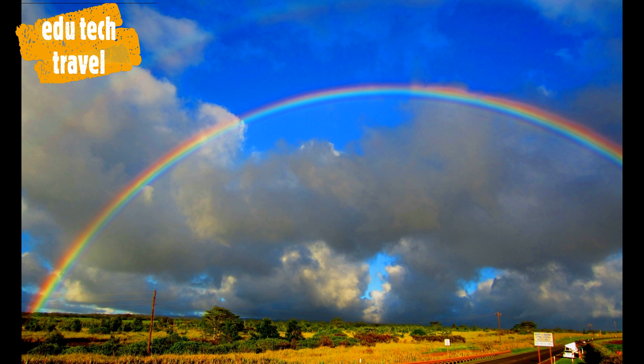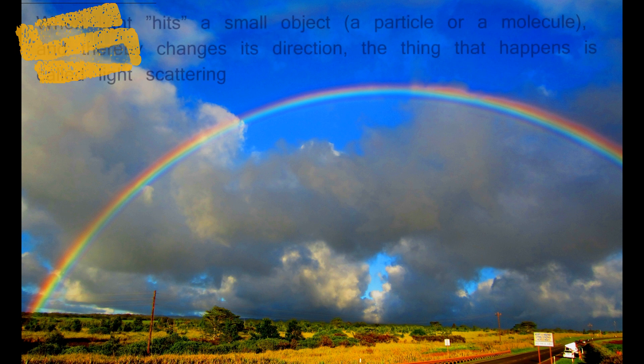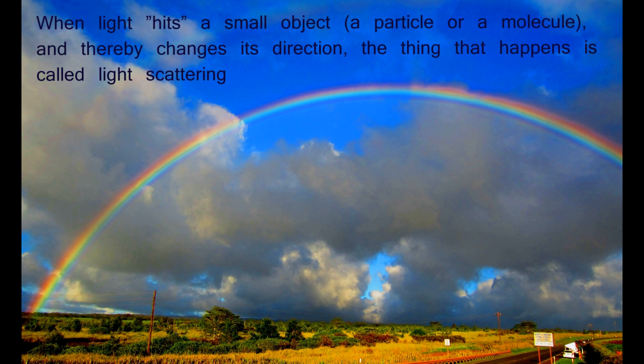When light hits a small object and thereby changes in direction, the thing that happens is called light scattering.